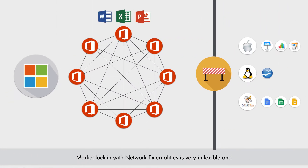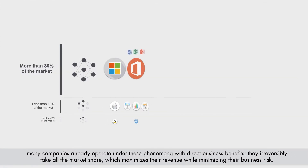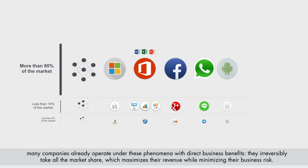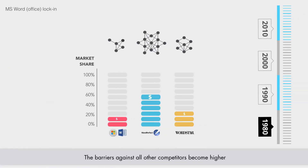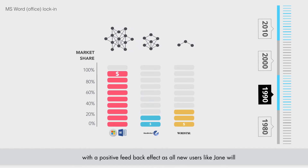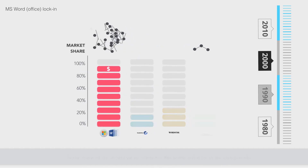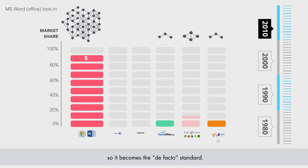Market lock-in with network externalities is very inflexible, and many companies already operate under these phenomena with direct business benefits. They irreversibly take all the market share, which maximizes their revenue while minimizing their business risk. The barriers against all other competitors become higher, with a positive feedback effect, as all new users, like Jane, will have more of an incentive to consume the same solution to be compatible, so it becomes the de facto standard.